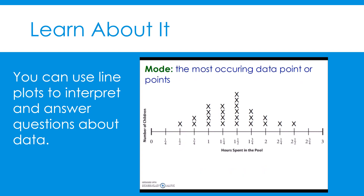Next, we will find the mode. The mode is the most occurring data point or points in the data set. Let's look at the number line on the line plot and look at the X's above — which data point occurs the most? I see that six students swam for one and one-half hours. That is more X's above one and one-half than above any other value in the number line. Therefore, one and one-half is the mode.